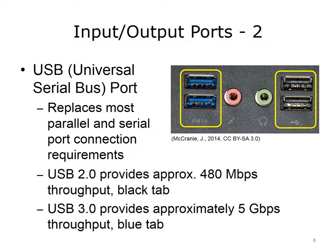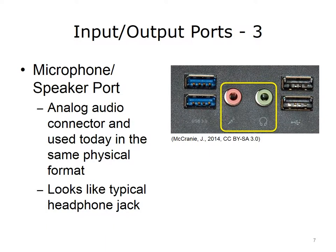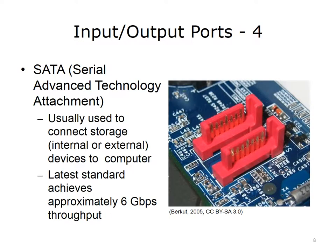If you look into the USB 2.0 port, you will see a black tab near the top of the port. USB version 3.0, released in 2008, provides approximately 5 GB per second throughput, and is meant for doing things like transferring high-definition video footage and backing up an entire hard drive to an external drive. If you look into the USB 3.0 port, you will see a blue tab near the top of the port. Another type of input-output port is the Microphone and Speaker Port, which is an analog audio connector invented almost a hundred years ago, and used today in basically the same physical format. It looks like a headphone jack. The Serial Advanced Technology Attachment, or SATA, connects internal or external storage devices to the computer.